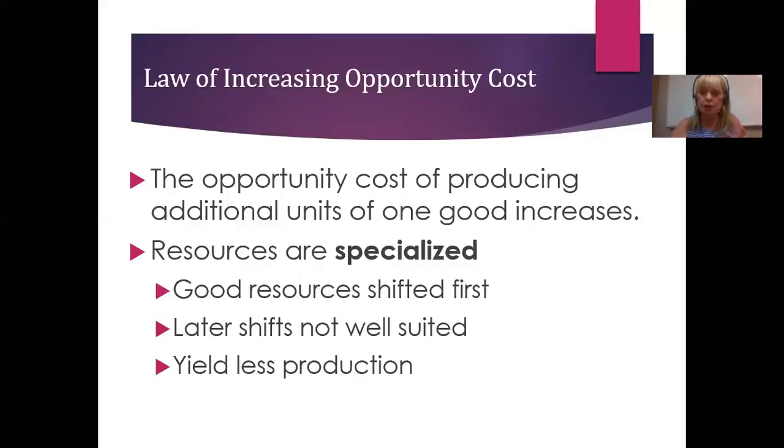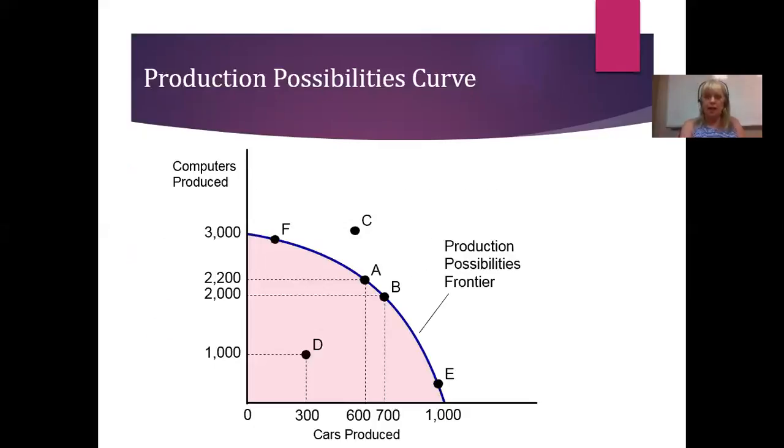So when you start shifting these resources. Well, the obvious thing is, first, you're going to take the resources that are well suited to the shift. And you won't, it won't cost you very much in lost productivity. Those workers can do a good job making cars. We'll move them over first. But as you continue to shift more and more workers, you have to dig deeper. You have to go to your B team and your C team and your D team to keep moving workers over. And these are workers increasingly that they're really good at computers, but not so good at cars. So our opportunity cost is greater. We have to move more workers over in order to get the same amount of increase in productivity. So we lose more of the other item. Our opportunity cost is increasing. So that's what makes this production possibilities curve nonlinear.